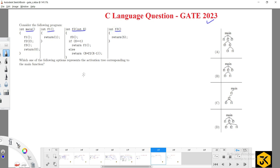Which one of the following options represents the activation tree corresponding to the main function? When we call functions, an activation tree is going to be created. Based on that activation tree, the order of your programs are going to be executed.